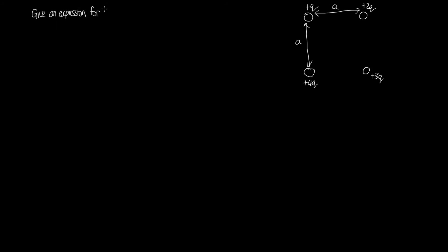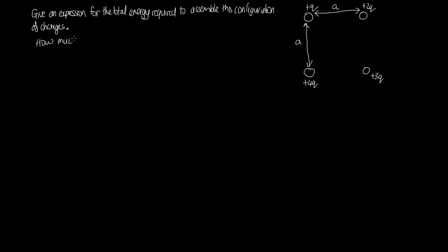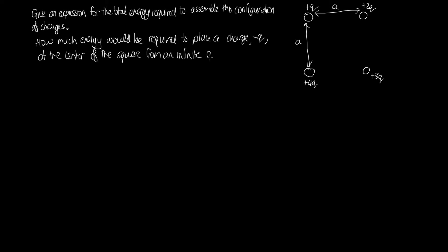The question asks us to find the expression for the total energy required to assemble this configuration of charges. In the second part we're asked how much energy would be required to place a charge of minus q at the center of the square from an infinite distance away. To solve the first part, we'll imagine placing the charges one at a time. We'll number them one, two, three, and four — this is the order we're going to place these charges in.